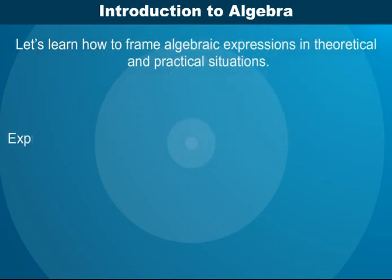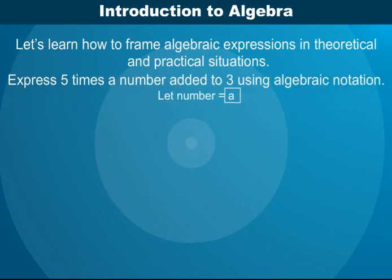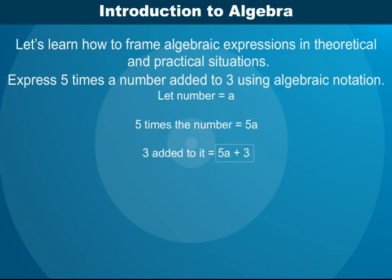How do you express a number multiplied by 5 and 3 added to it? Let the number be A. Number multiplied by 5 is 5A. 3 added to it is 5A plus 3.